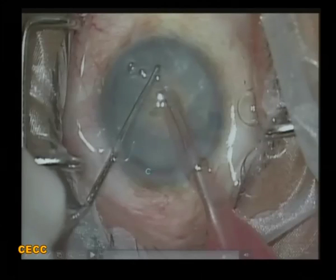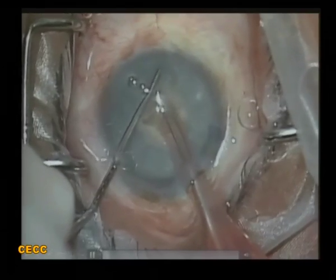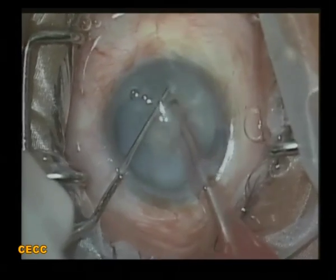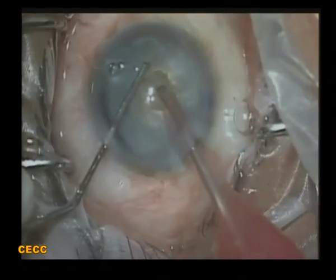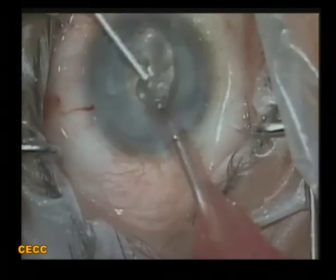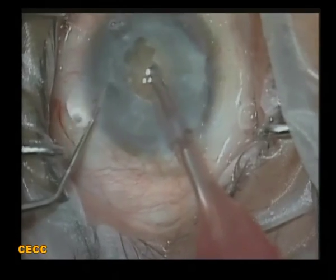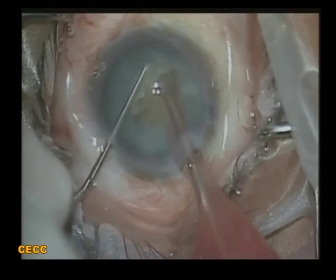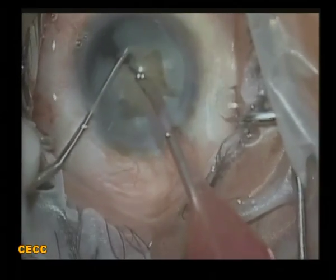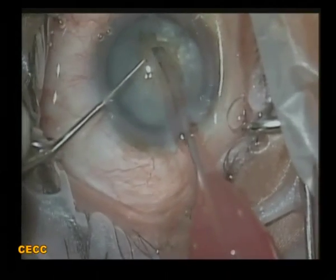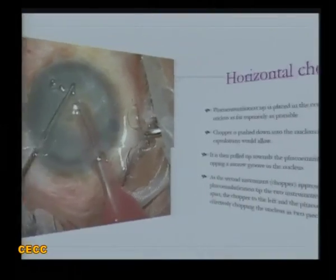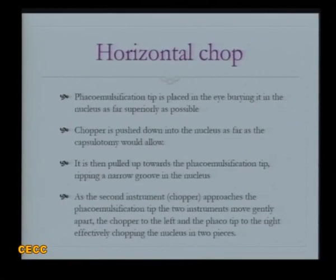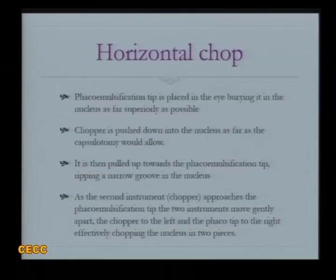In a white cataract case, a small capsulorrhexis was planned in two stages. I had already impaled the nucleus properly but there was still no chop — the nucleus was not rotating either, meaning it was not being properly divided. I realized the chopper was not appropriate. You need to create your own set of instruments — your own chopper and rhexis forceps. With a slightly sharper and longer chopper, the chopping was immediately a piece of cake. Know your instruments and machine parameters. In horizontal chop, the chopper plays a key role especially with a hard nucleus — it must cut through to the equator to give an effective chop.